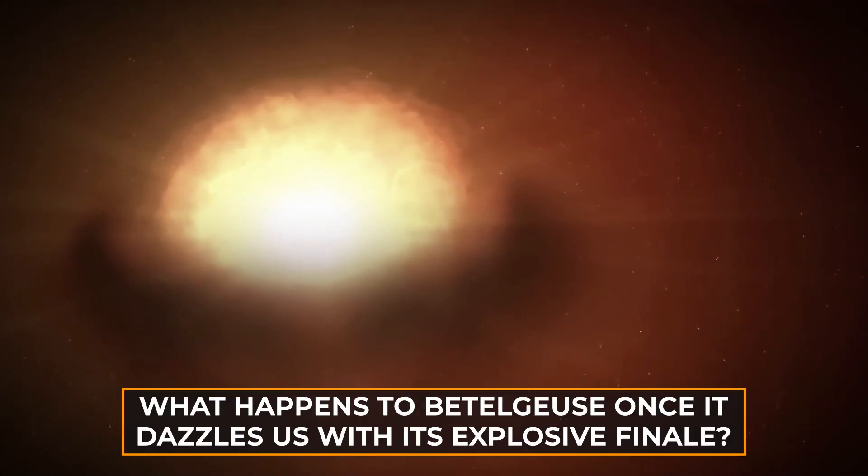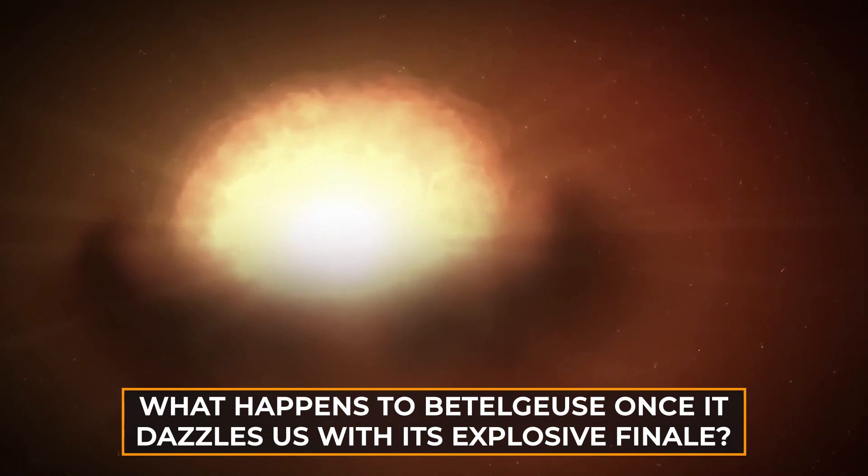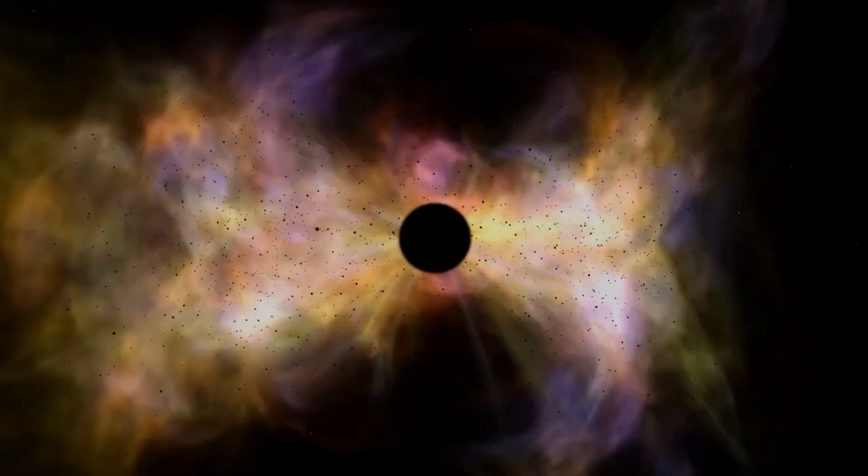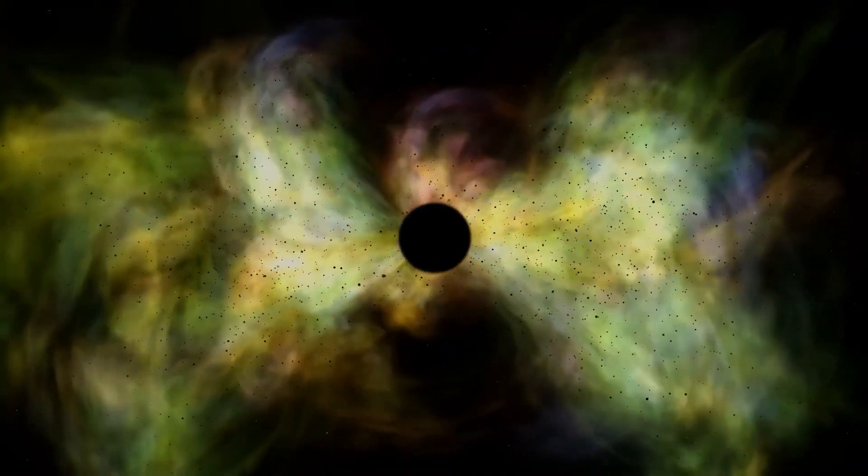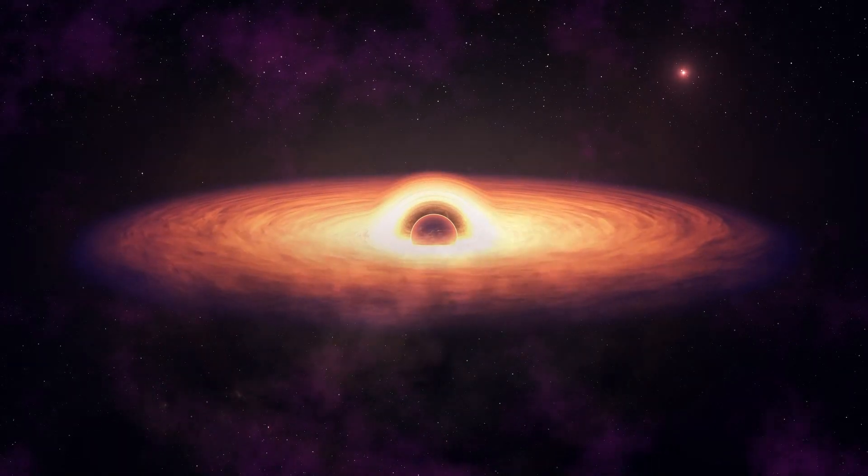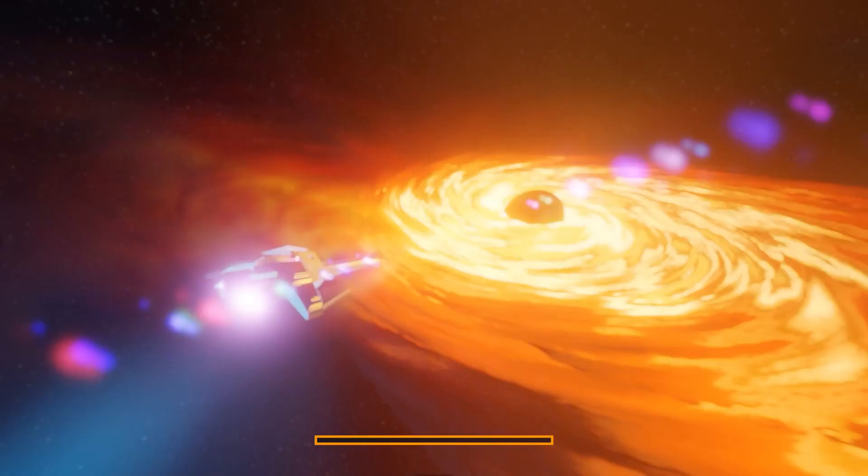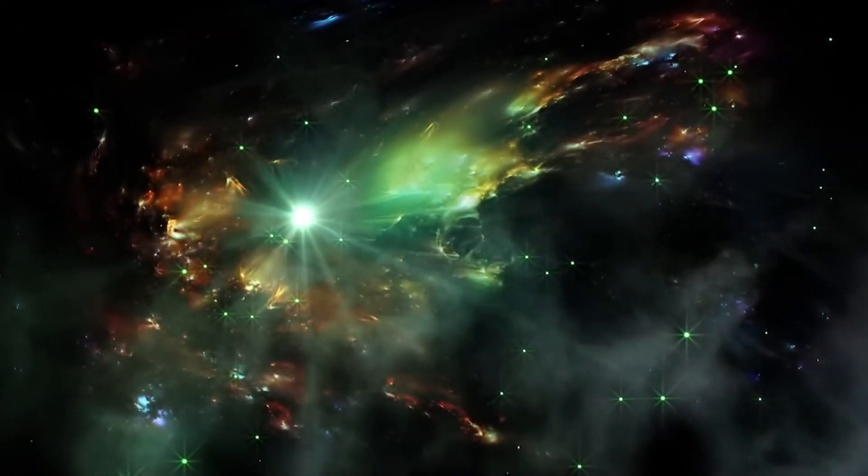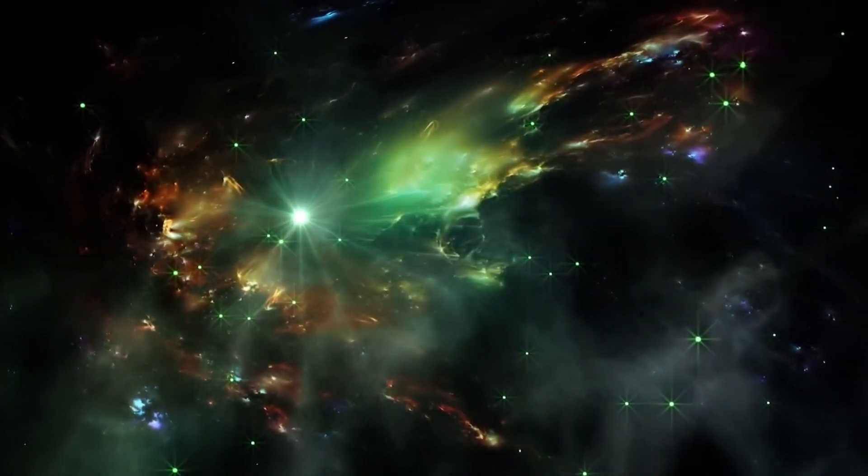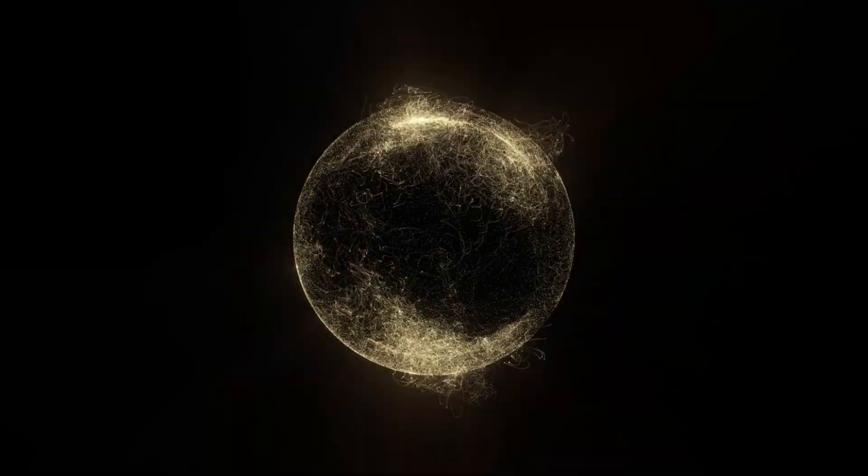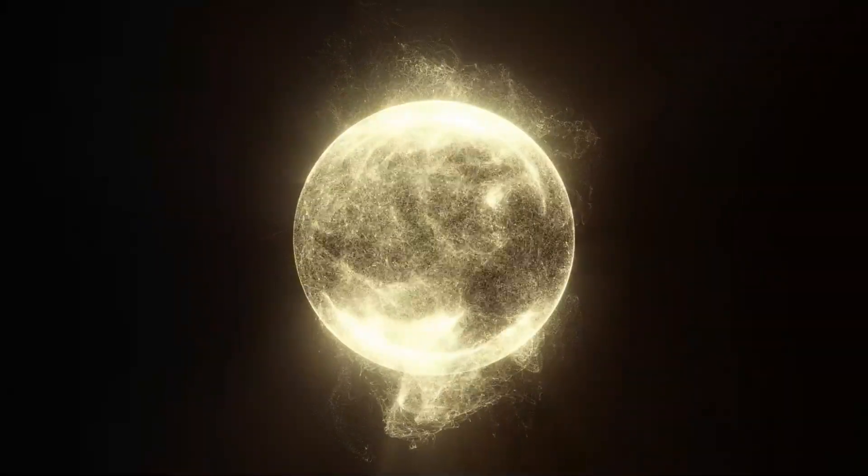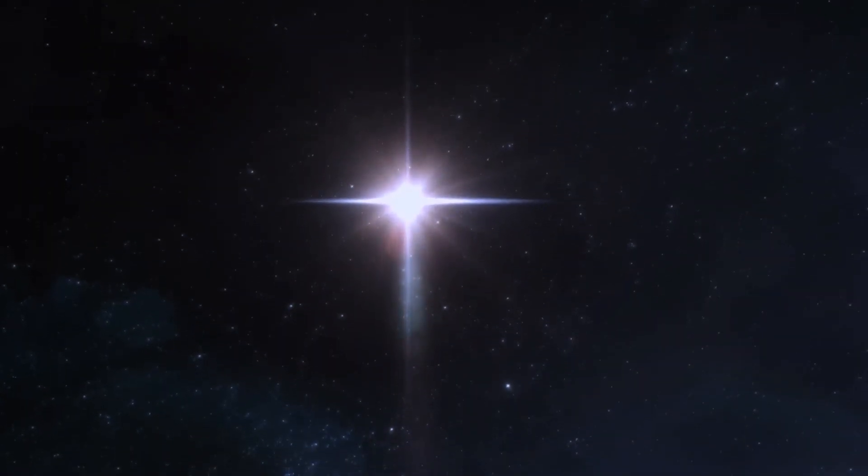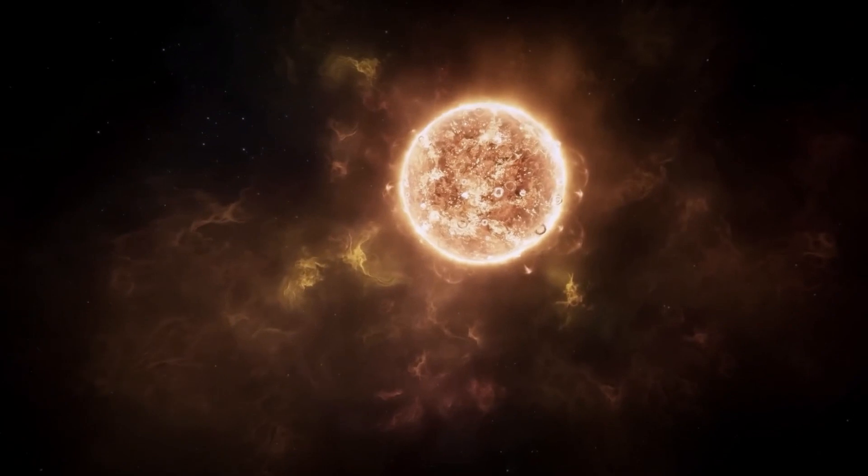So what happens to Betelgeuse once it dazzles us with its explosive finale? It embarks on a new journey, and what that journey looks like depends on its mass. If its core is sufficiently massive, it could collapse into a black hole, an entity with such gravity that not even light can escape. Conversely, if the core falls short in mass, it may become a neutron star, an incredibly dense object primarily composed of neutrons. Witnessing the birth of either a black hole or a neutron star from Betelgeuse's remnants would be a monumental event in the field of astronomy.